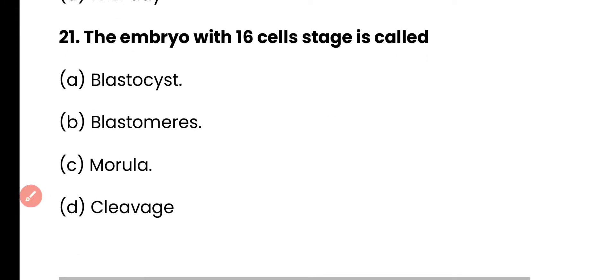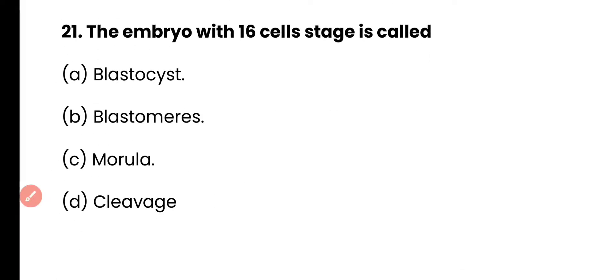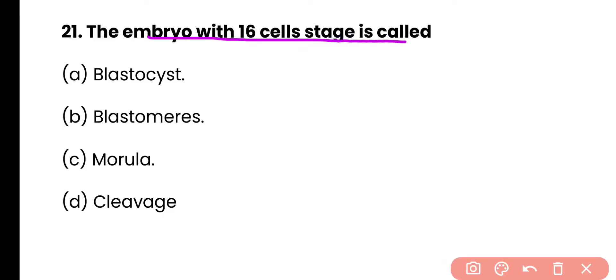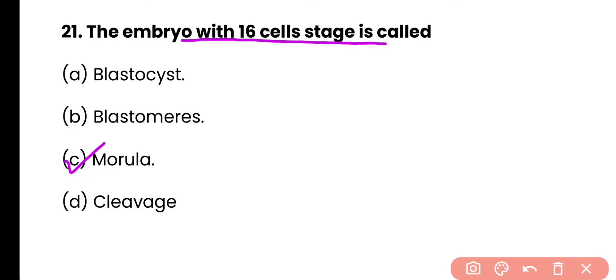Question 21: The embryo with 16-cell stage is called — blastocyst, blastomere, morula, or cleavage? Correct answer is option C. The embryo with 8 to 16 cell stage is known as morula, and it looks like a mulberry fruit.